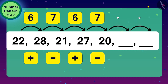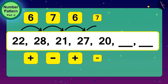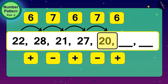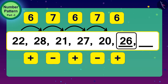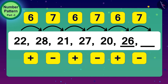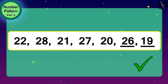Children, do you now understand the unique rule of this number pattern? This number pattern is carried forward by adding 6 once and subtracting 7 the second time. So to fill the next blank, we add 6 to 20 — that gives us 26. And to fill the next blank, we subtract 7 from 26 — that is 19. Here we completed this number pattern perfectly using addition and subtraction.